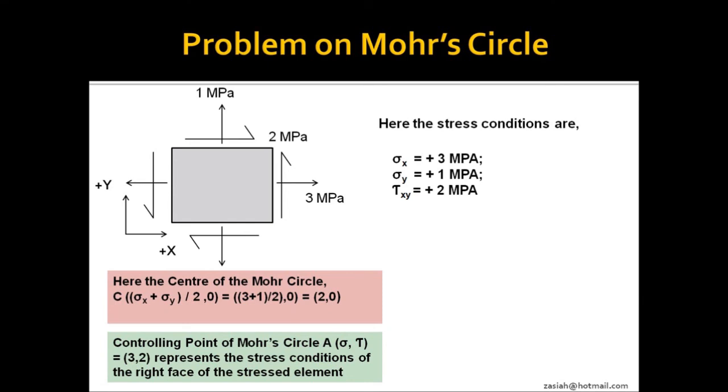Before we draw the Mohr's circle, first we have to determine the X and Y coordinates of the center point C. Using the formula given here, the X coordinate of C is found 2, and Y coordinate is 0.